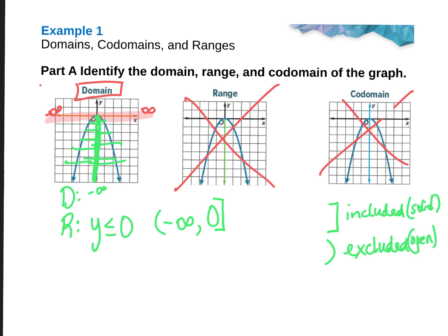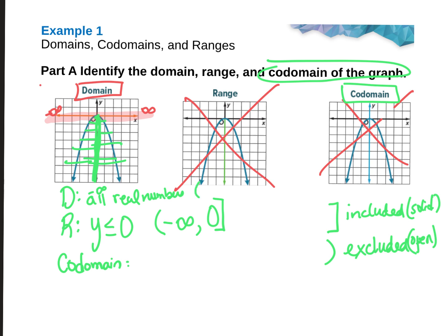The codomain — if you wrote down the definition — is all real numbers unless otherwise noted. They have not stipulated here what the codomain is, so it's understood to be all real numbers. In Algebra 2, we write all real numbers as negative infinity to positive infinity. That's interval notation, and the codomain is negative infinity to positive infinity because it is not otherwise stated.